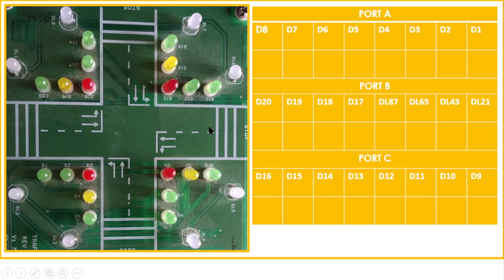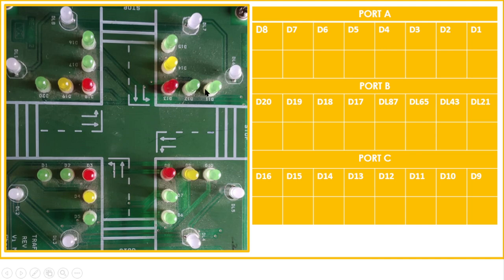All 28 LEDs are connected to the ports of the 8255. The 8255 has three ports — Port A, Port B, and Port C — each 8 bits wide. Based on the hardware architecture, D1 to D8 are connected on Port A, D9 to D16 are connected on Port C, D17 to D20 are connected on upper Port B, and the dual LEDs are connected on lower Port B.